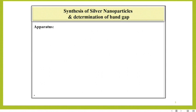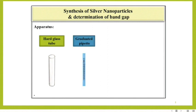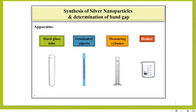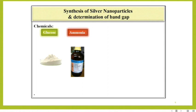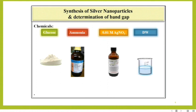Apparatus required for this experiment are hard glass tube, graduated pipette, measuring cylinder, and beaker. Chemicals required are glucose, ammonia solution, 0.01 molar HNO3 solution, and distilled water.